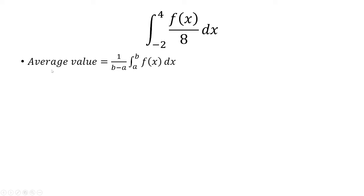So let's first find the formula. Average value is equal to 1 over the length of the interval times the integral from a to b of f of x dx.